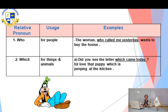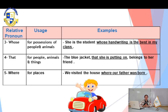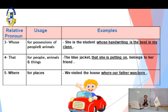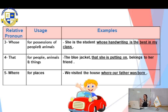Please move to slide number four for the third relative pronoun: 'whose.' We use 'whose' to refer to the ownership or possession of people or animals. For example: 'She is the student whose handwriting is the best in my class.' Where is the noun? Very good — 'student.' And where is the relative pronoun? 'Whose.' 'Whose handwriting?' — because this handwriting belongs to her. So 'whose' is the relative pronoun and 'whose handwriting is the best in my class' is the relative clause.